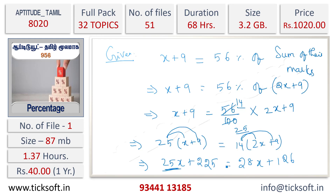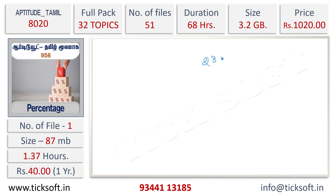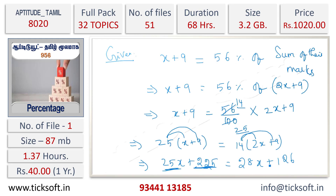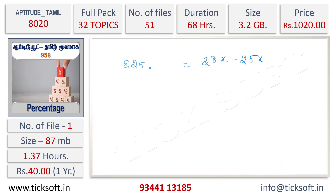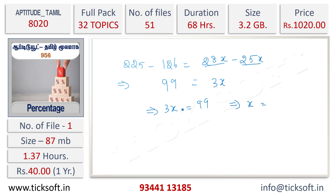Moving terms to opposite sides: 225 minus 126 equals 28x minus 25x. So 99 equals 3x, therefore 3x equals 99, and dividing both sides by 3 gives x equals 33.